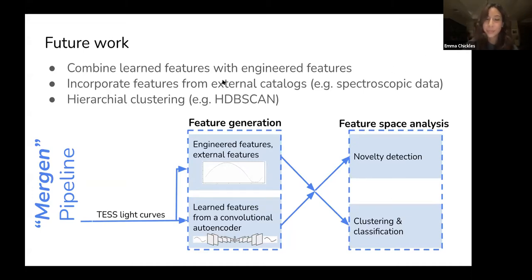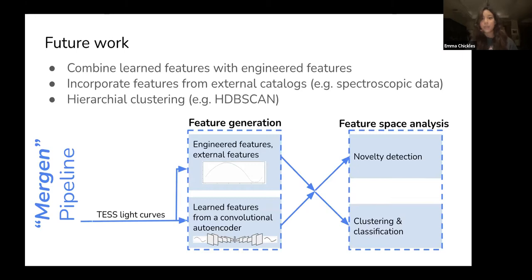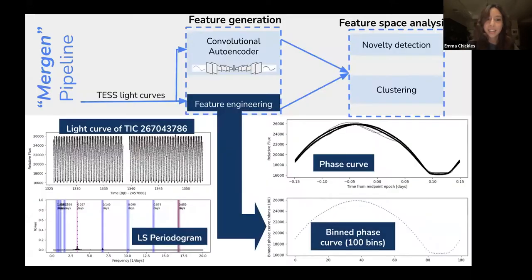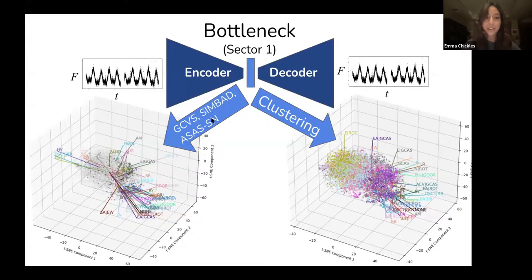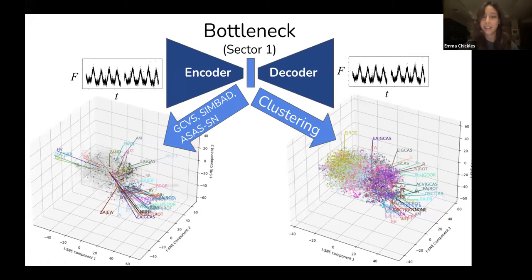Daniel Giles asked: did you say how non-variables are filtered out prior to classification, or are most objects found to be in a variability class? We don't discriminate between non-variable and variable stars. What happens is — if a cluster includes something with a classification, whether that's a variability type or otherwise, that whole cluster gets applied that same label. So non-variable stars would be clustered the same way.